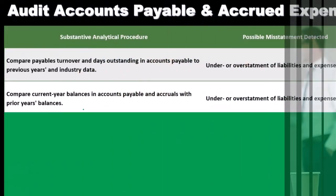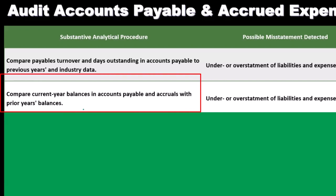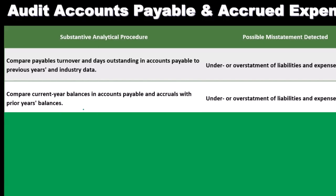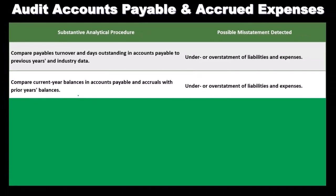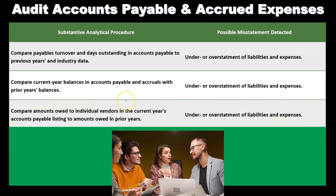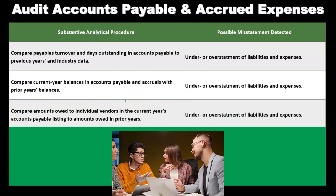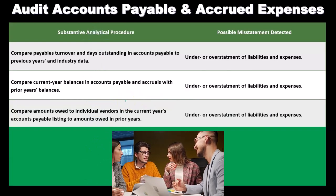We can also compare current year balances in accounts payable and accruals with the prior year's balances. This is a common procedure — comparing current year to prior year to detect under or over statement of liabilities and expenditures. Any unusual activity identified through year-over-year comparison is something we would investigate further.